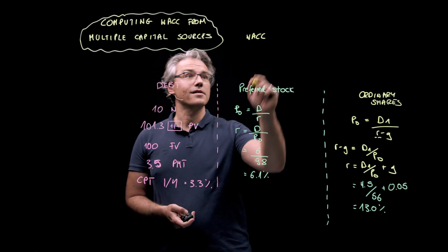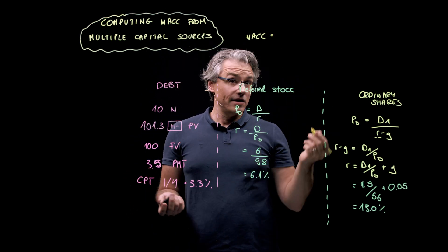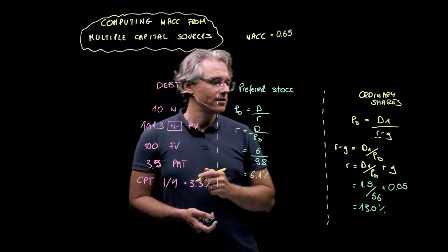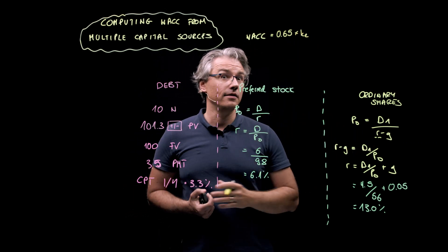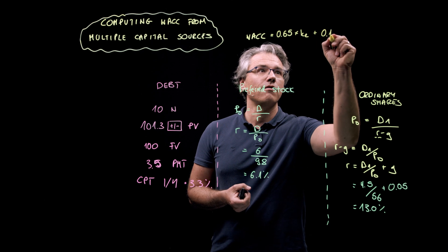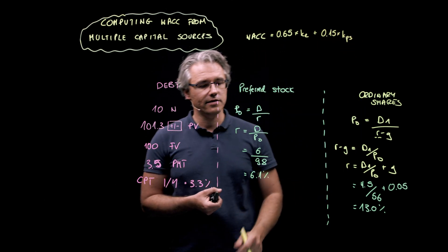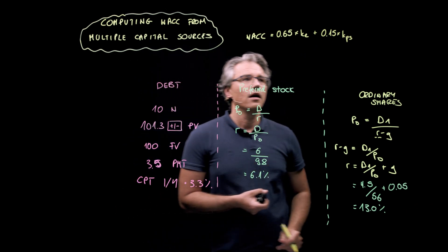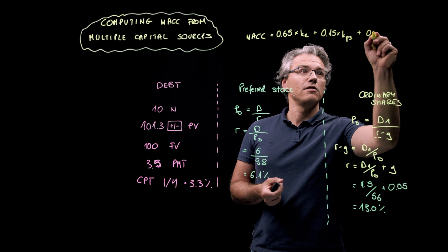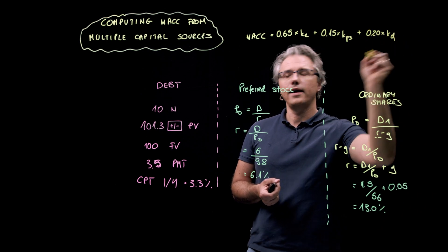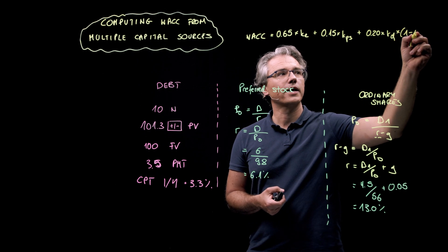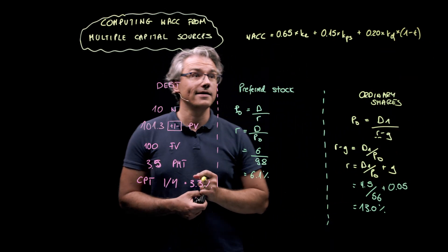So, what I could do is write that WACC equals 0.65 to reflect 65% weight for the company's ordinary shares, times the cost of equity, i.e. the cost of ordinary shares, plus whatever was the weight for the preferred shares. That was 15%, 0.15 times the cost of preferred shares, which we had over here. And I'm also going to have my final source of capital that was debt. Its weight was 20%. So, 0.20 times the cost of debt, which we actually computed over here, but critically multiplied by 1-T, the tax shield, to account for the fact that interest paid on debt is tax deductible.